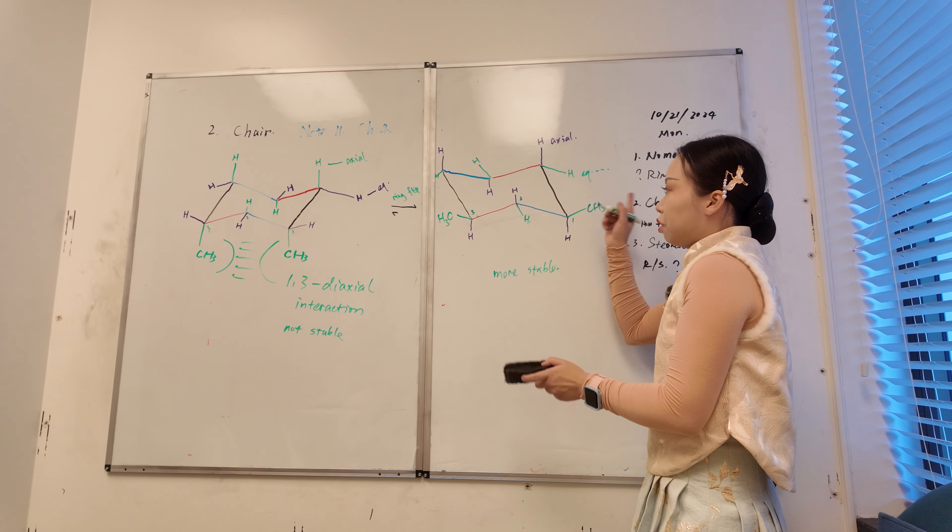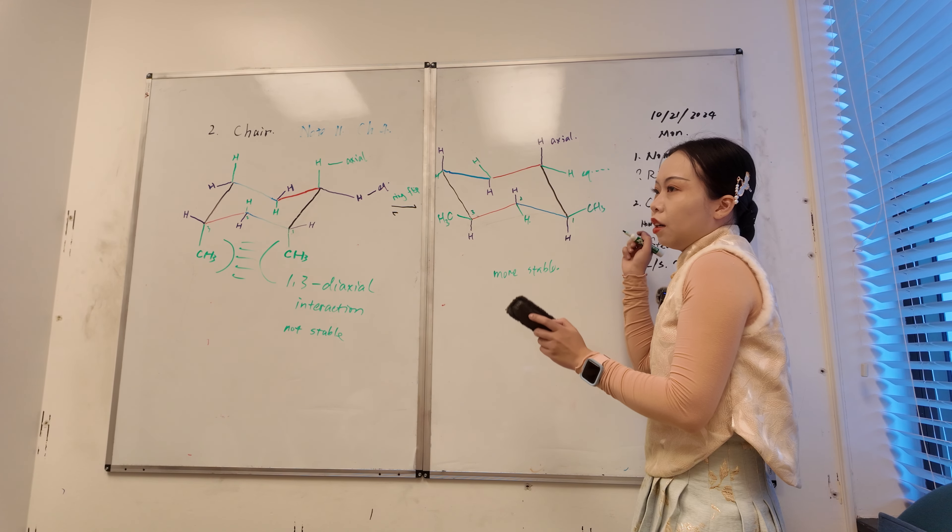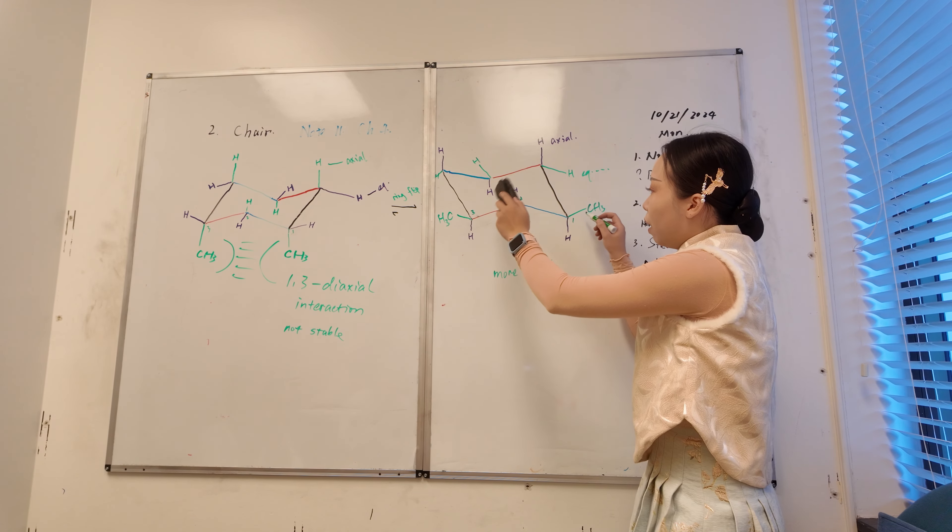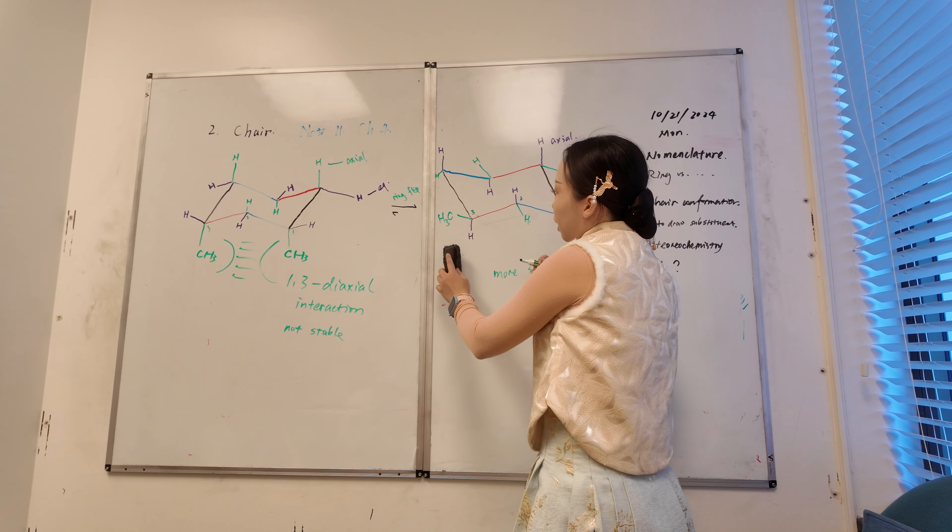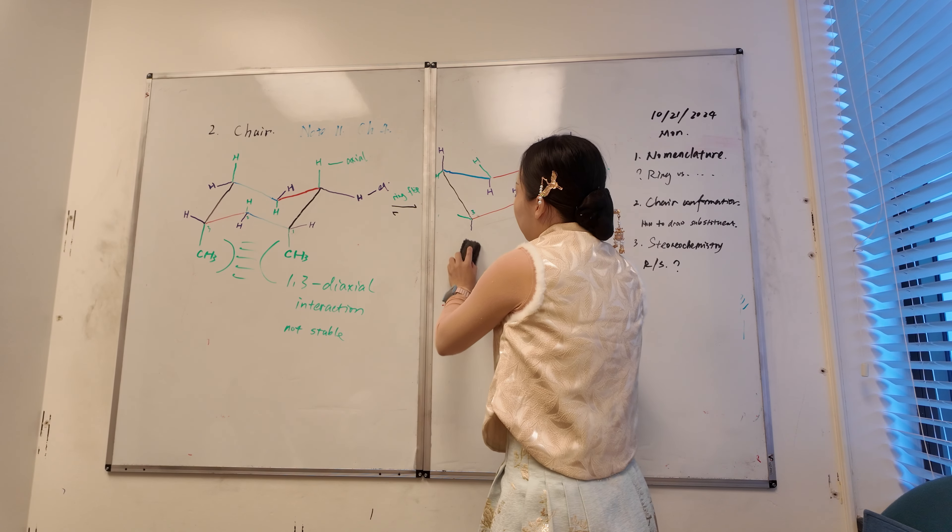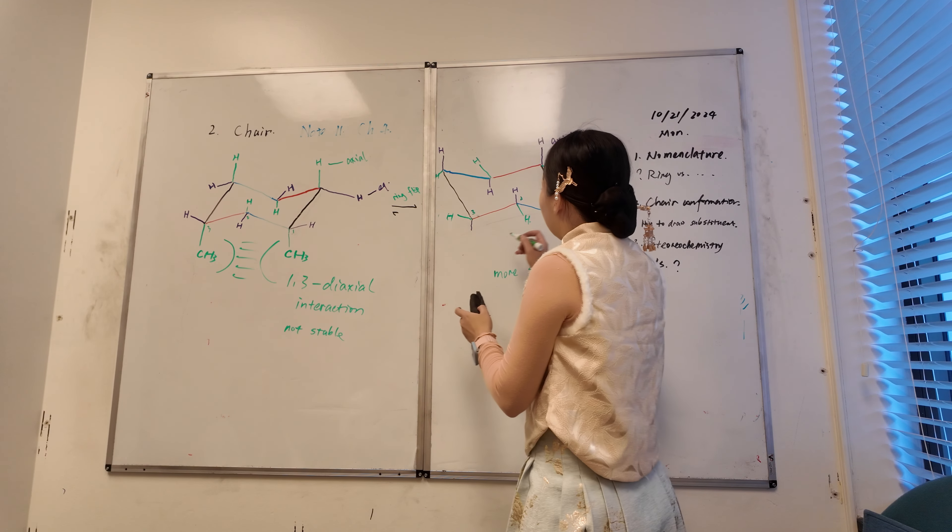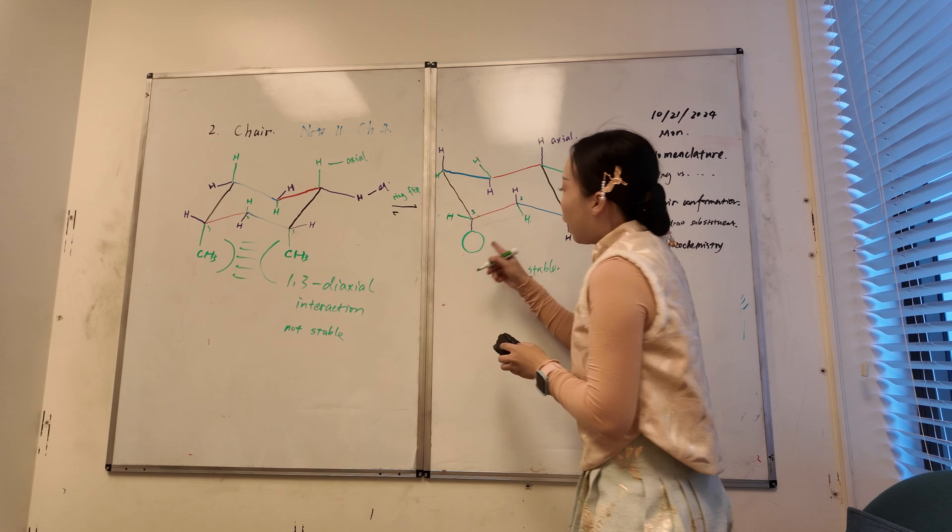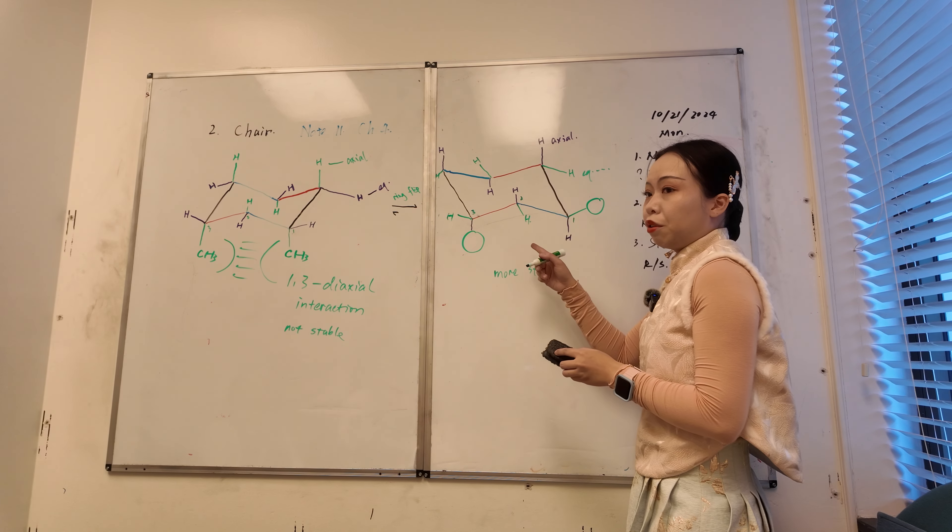If you have one axial and one equatorial, that's fine. It's just like either would work. But if this is the case, hydrogen, and then you have one like a group and the other group, you have to be one axial and one equatorial.